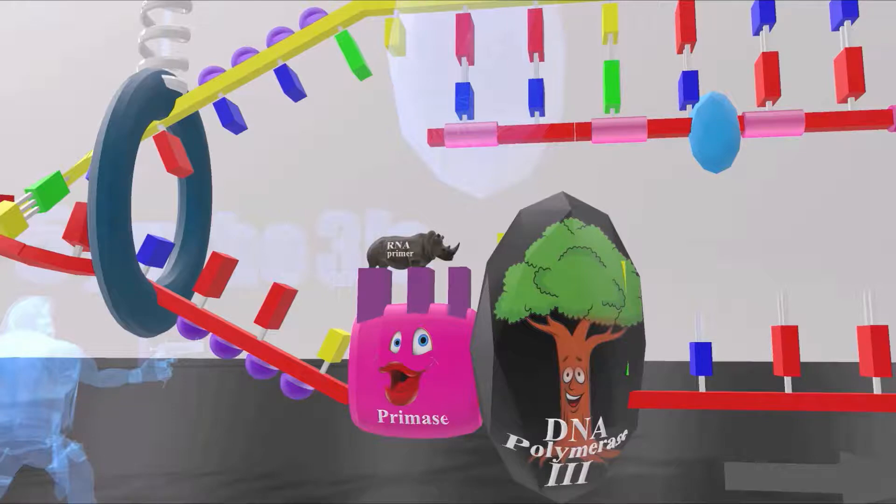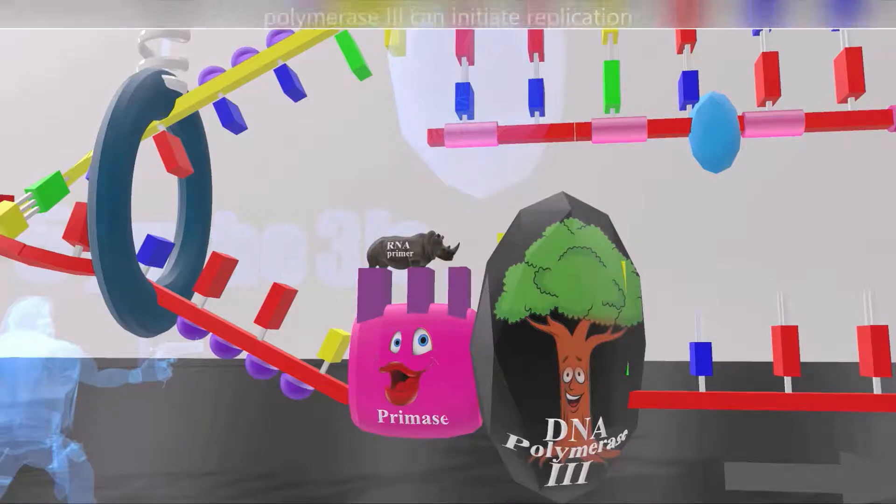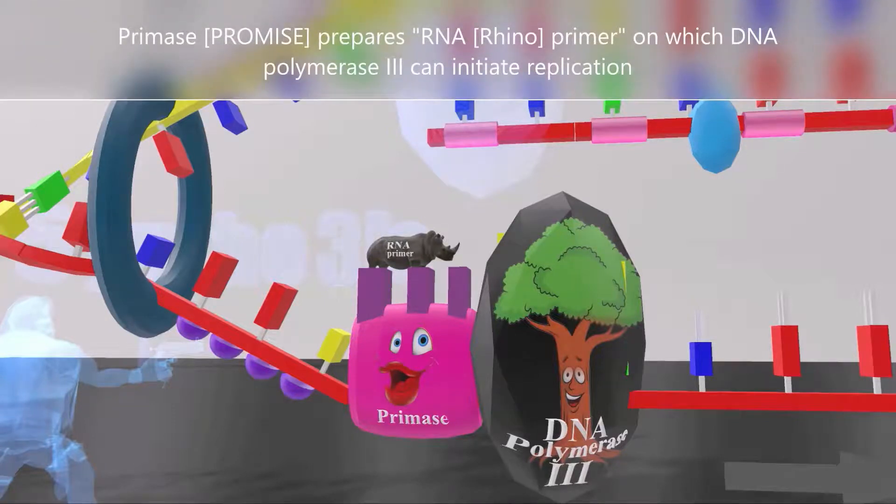But the point is that she loves him and prepares stuff for him. In the case of DNA replication, she prepares an RNA primer for him. DNA polymerase III can't do anything without Primase, because Primase prepares an RNA primer on which DNA polymerase III can initiate replication.